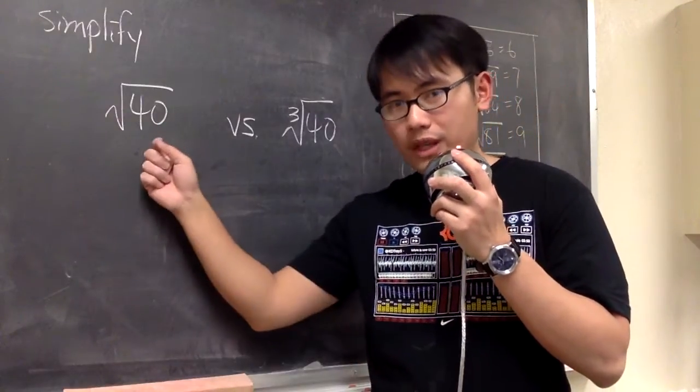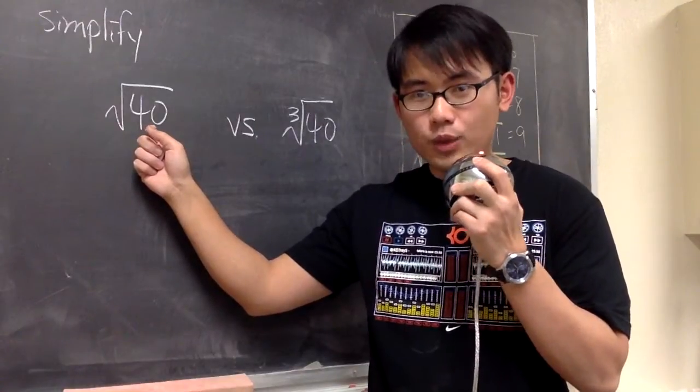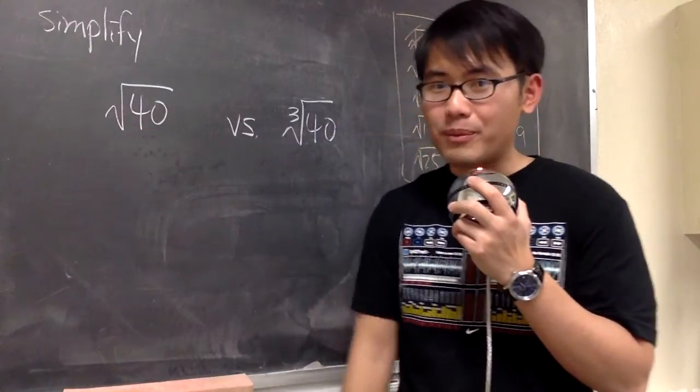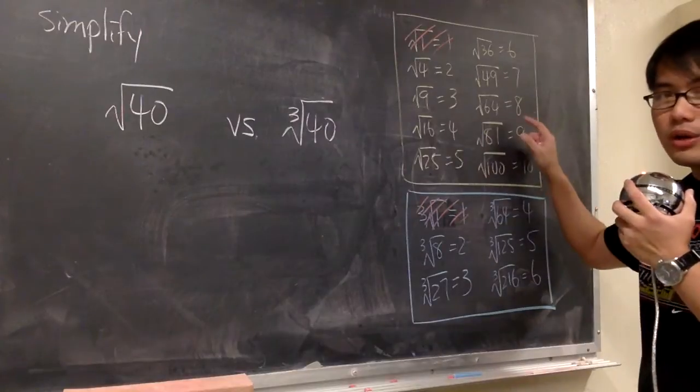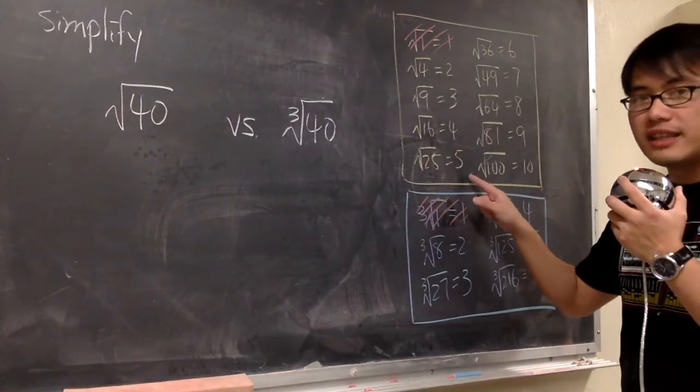However, we can break this apart. To do that, we ask ourselves, what times what will give us 40? And then one of the numbers should be a perfect square, because we know a perfect square in the square root will give us a nice number.